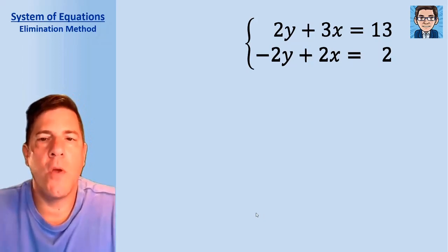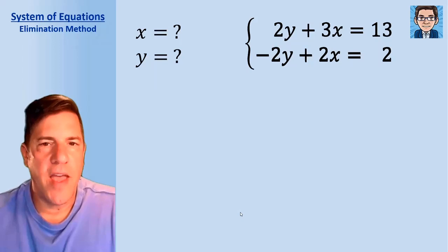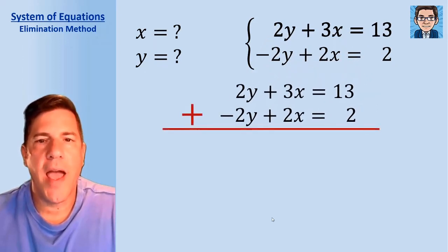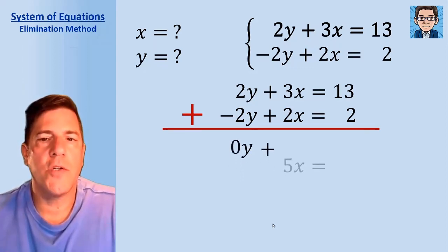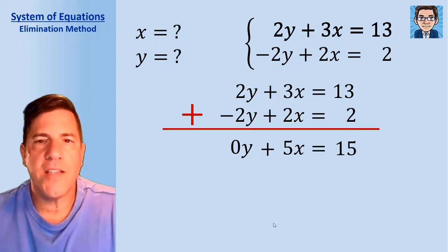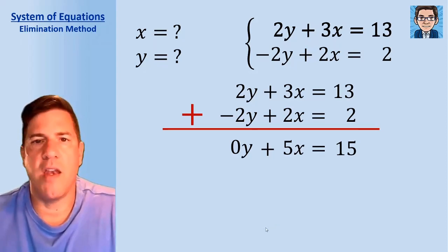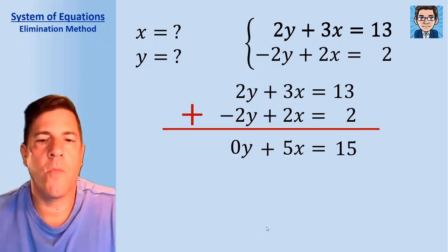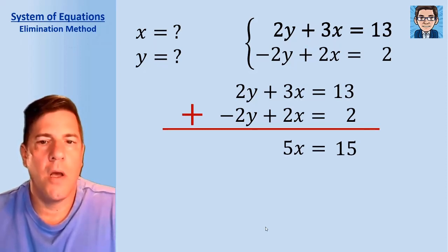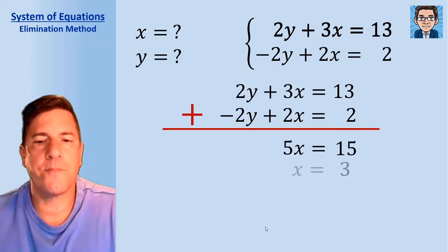Let's take a look at solving by elimination. We've got a system of two equations and we're trying to find the x and y that make both true at the same time. We take both equations and add them together. The 2y and the minus 2y gives us 0y, 3x and 2x gives us 5x, and adding 13 and 2 gives us 15. The y's get eliminated from the equation, leaving us one equation with one variable. So 5x equals 15; divide by 5 and get x equals 3.